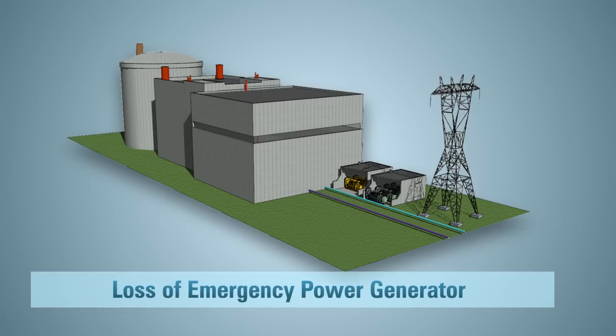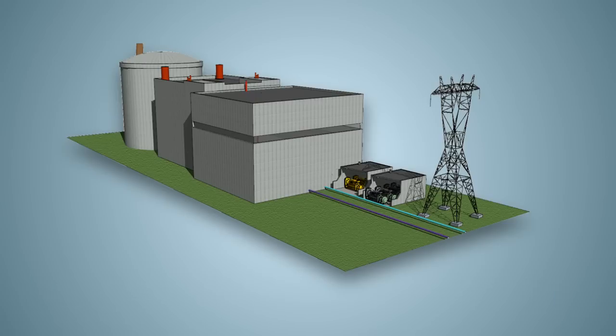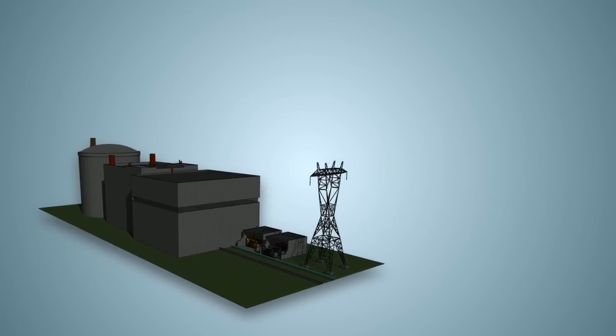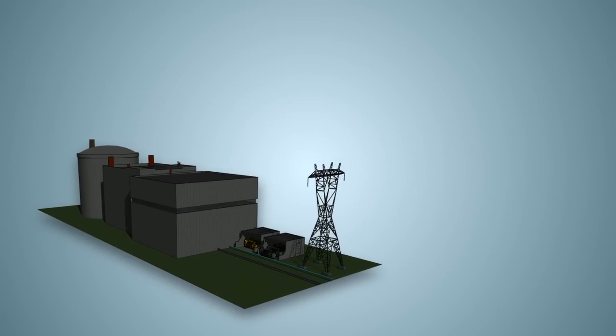Though unlikely, let's keep going and assume the emergency power generators stop working. We now have a total station blackout. This means all power sources used to cool the reactor and spent fuel pool, including off-site power, on-site power, and the standby and emergency power generators, are all unavailable.